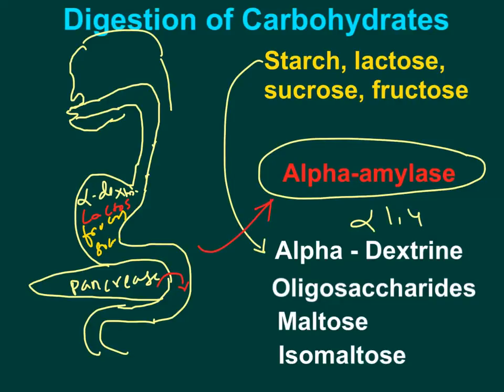The pancreatic juice contains digestive enzymes. The carbohydrate digestive enzyme from the pancreas is pancreatic alpha amylase. This enzyme is very similar to salivary alpha amylase — it is also an alpha endoglycosidase that acts on alpha 1,4 glycosidic bonds. The substrate for pancreatic alpha amylase is alpha dextrin, which was produced from starch by salivary alpha amylase.